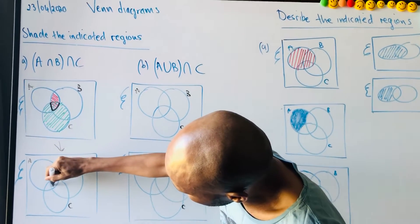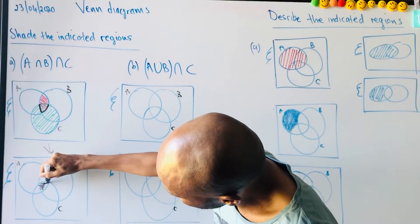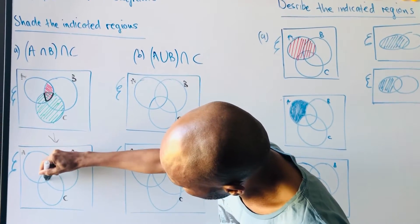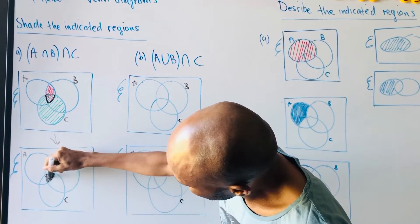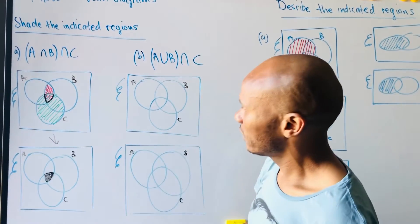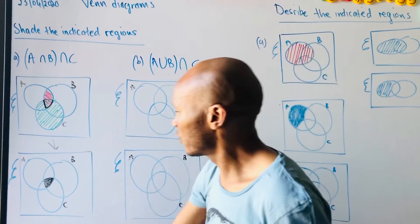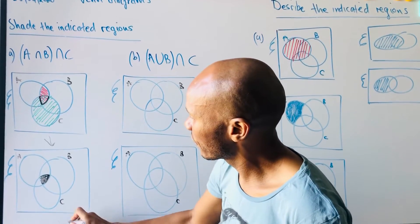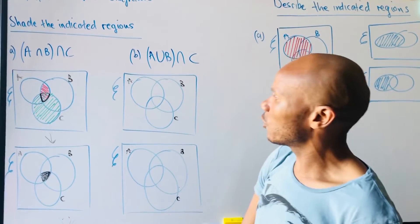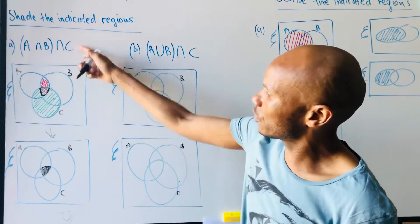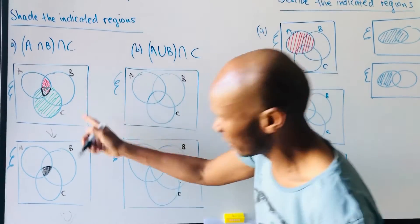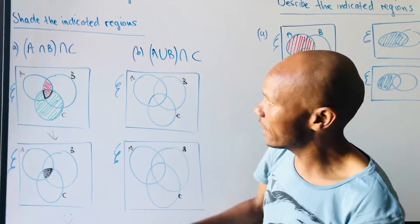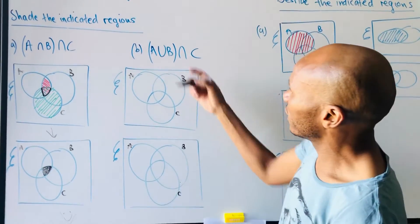So I transfer that overlapping part down to the final answer diagram. That will be the final answer — not the working diagram, but the transferred result.